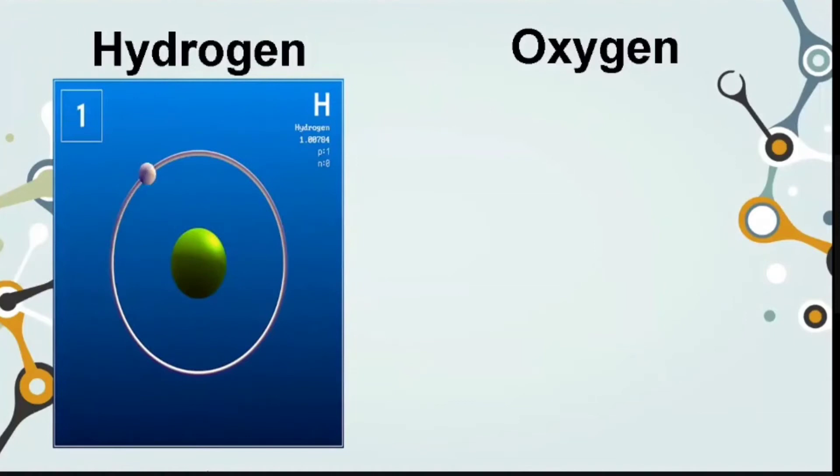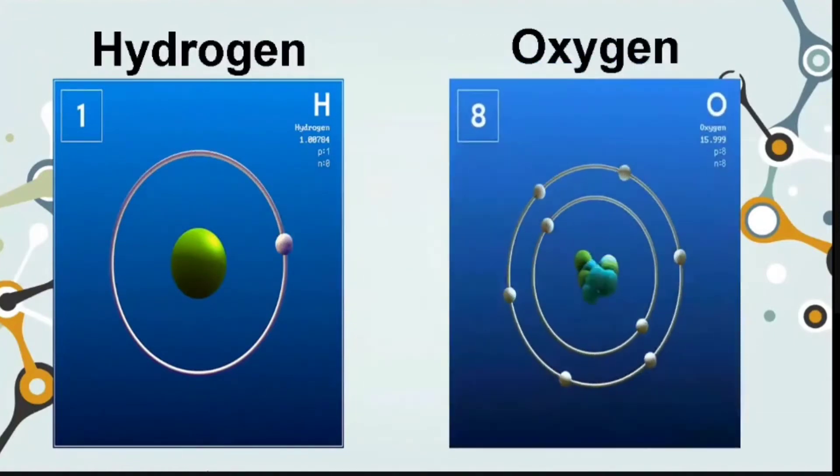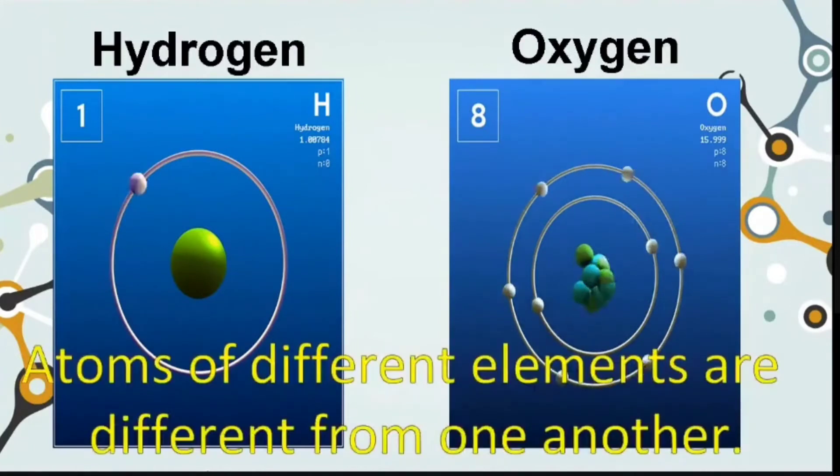Neutrons have no charge. Examples of elements are hydrogen and oxygen. This is the atom of hydrogen while the second one is the atom of oxygen. From the diagram given, we can say that atoms of different elements are different from one another because they have different numbers of subatomic particles known as electrons, protons, and neutrons.